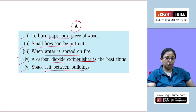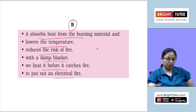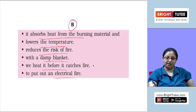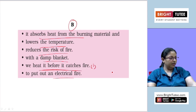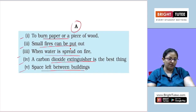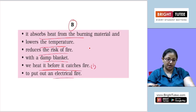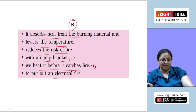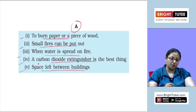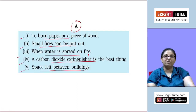The first one — to burn paper or a piece of wood — we heat it before it catches fire. If we have to burn a piece of paper or wood, we heat it before it catches fire. Next, small fires can be put out with a damp blanket. We all know small fires can be put out with a damp blanket.